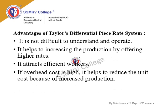Advantages of Taylor's Differential Piece Rate System: First, it is simple to understand and operate — sub-standard workers get 83% of the piece rate, while standard and above-standard workers get 175%. Second, it helps increase production by offering higher rates, motivating employees to produce more. Third, it attracts efficient workers. Fourth, if overhead cost is high, it helps reduce unit cost by encouraging increased production.